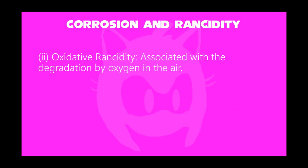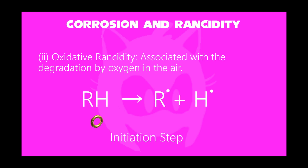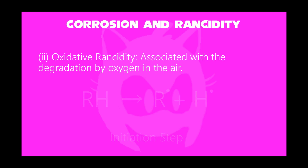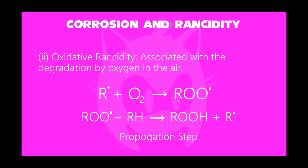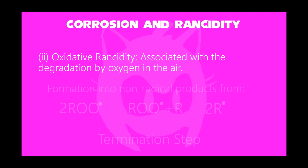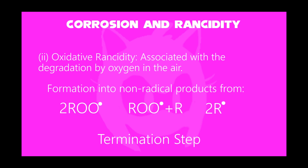Next, oxidative rancidity. The oxygen atom degrades itself in the air. In the initiation step, suppose RH product, where R can be any element, has divided into two products R and H. Then in the propagation step, R reacts with oxygen to form ROO, then RH is added to form ROOH plus R. Then in the termination step, these are identified as non-radical products — namely ROO, ROO plus R, and R.